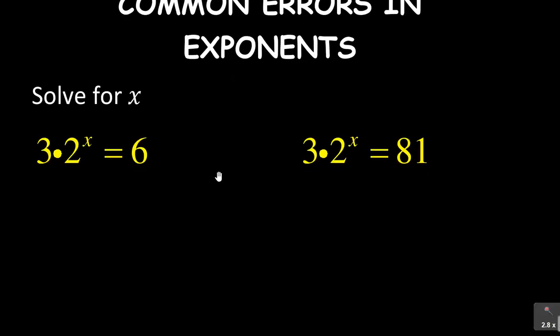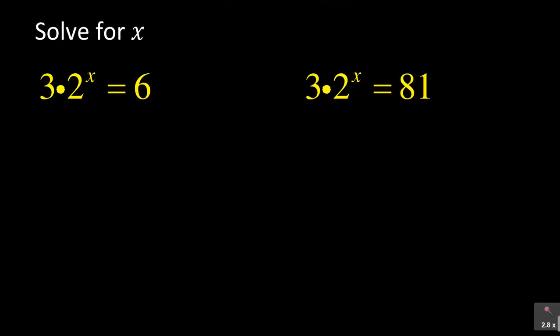Now, this is a solve for X problem. And there are a few things that I want you to avoid, no matter how tempting it is. I found this in some students when they want to solve. So what they do is, they are given this question: 3 times 2 to the exponent X is equal to 6. So what they do, they multiply 3 times 2 to get the 6. So what they will do is, they will say 3 times 2 is 6 to the exponent X is equal to 6.